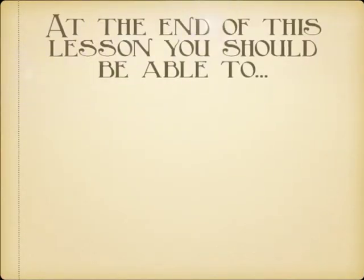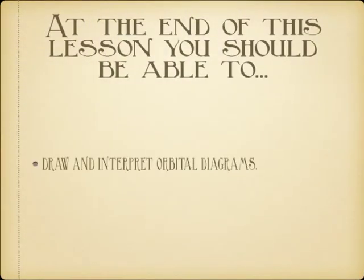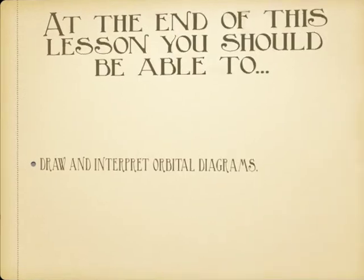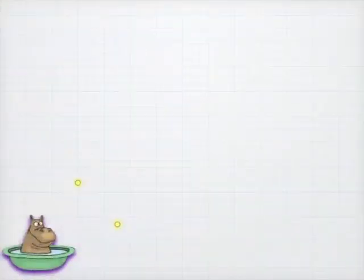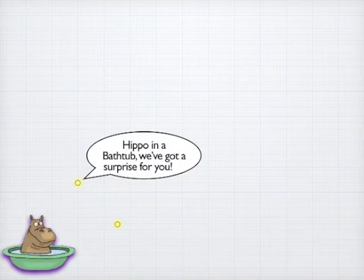It follows the rules of the quantum numbers that we learned before. They're very straightforward. Once you get them, you get them. But they can be a little tricky to begin with. We'll walk through this.